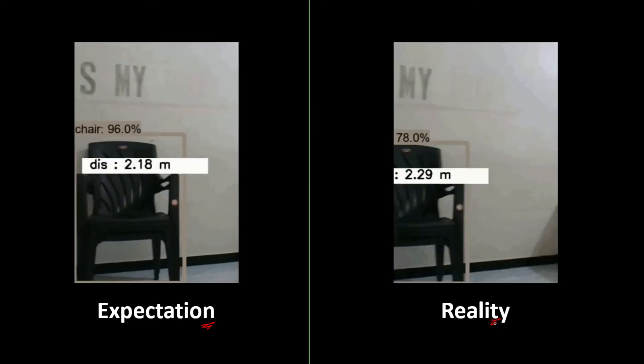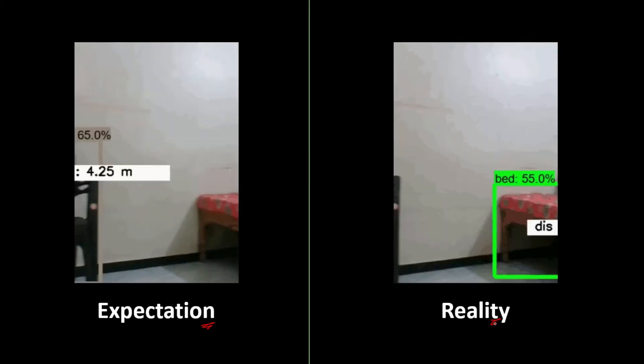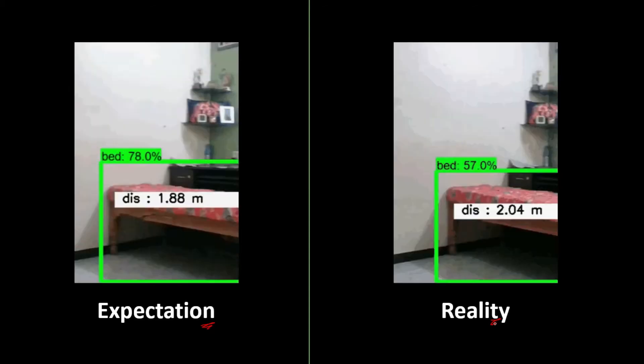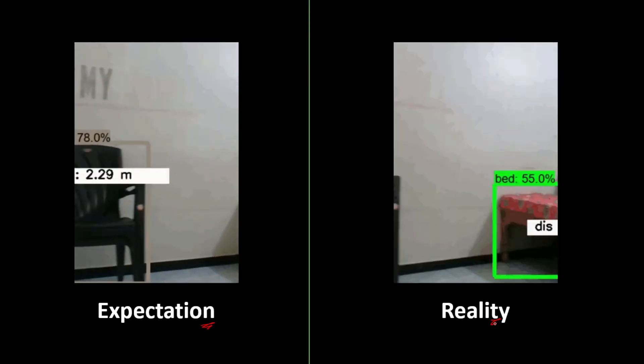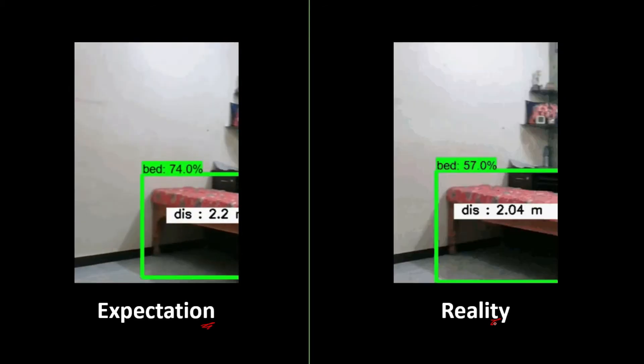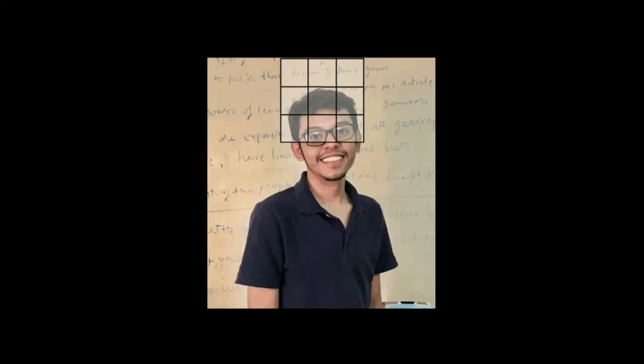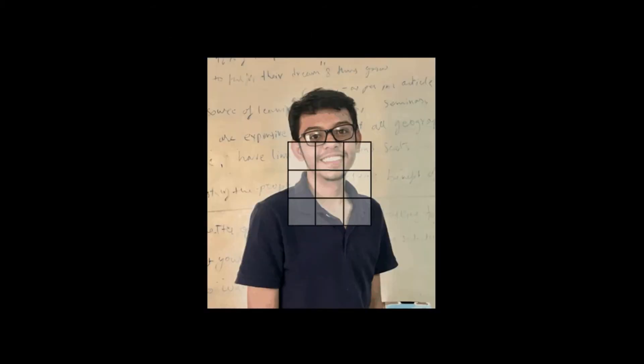To overcome this limitation, deep learning community and researchers came up with this amazing concept called convolutional neural networks. It is still a neural network, but it is a special type of neural network. The main idea behind a convolutional neural network is using filters. Now, these filters are sliding windows in our images that are responsible for detecting the features or patterns in the image.